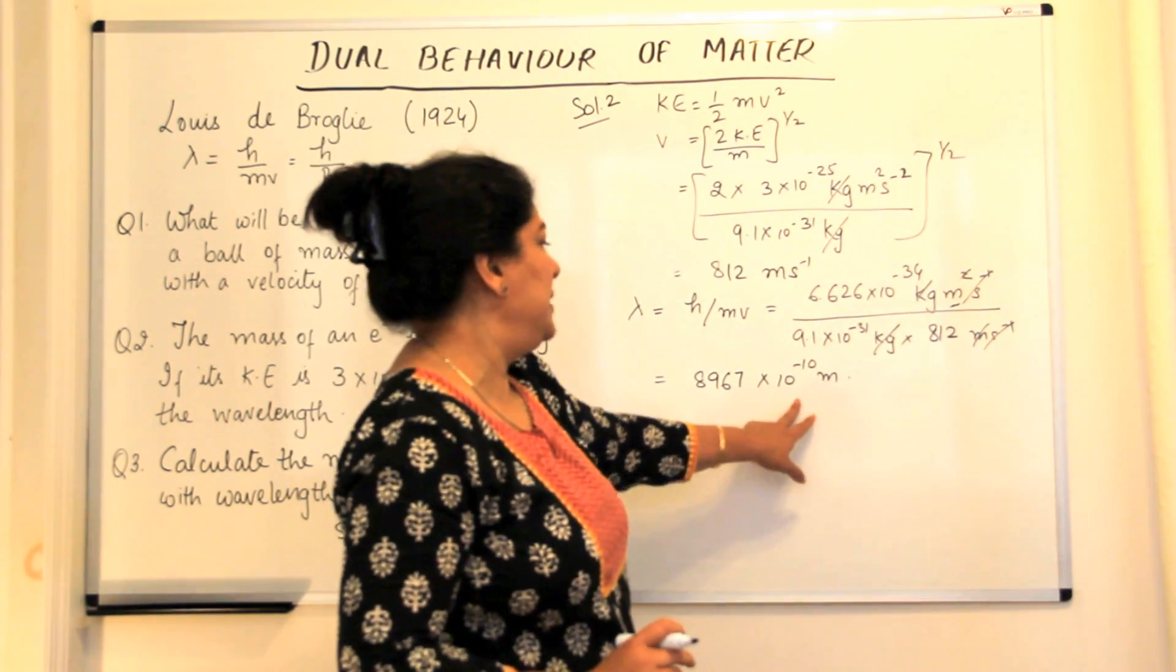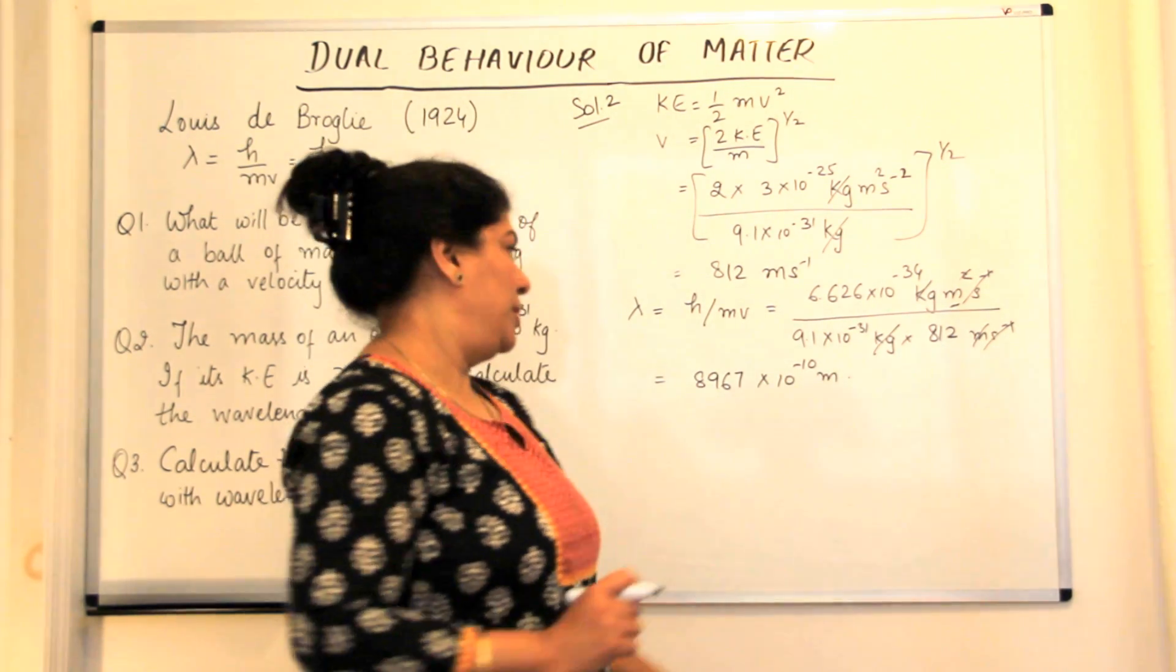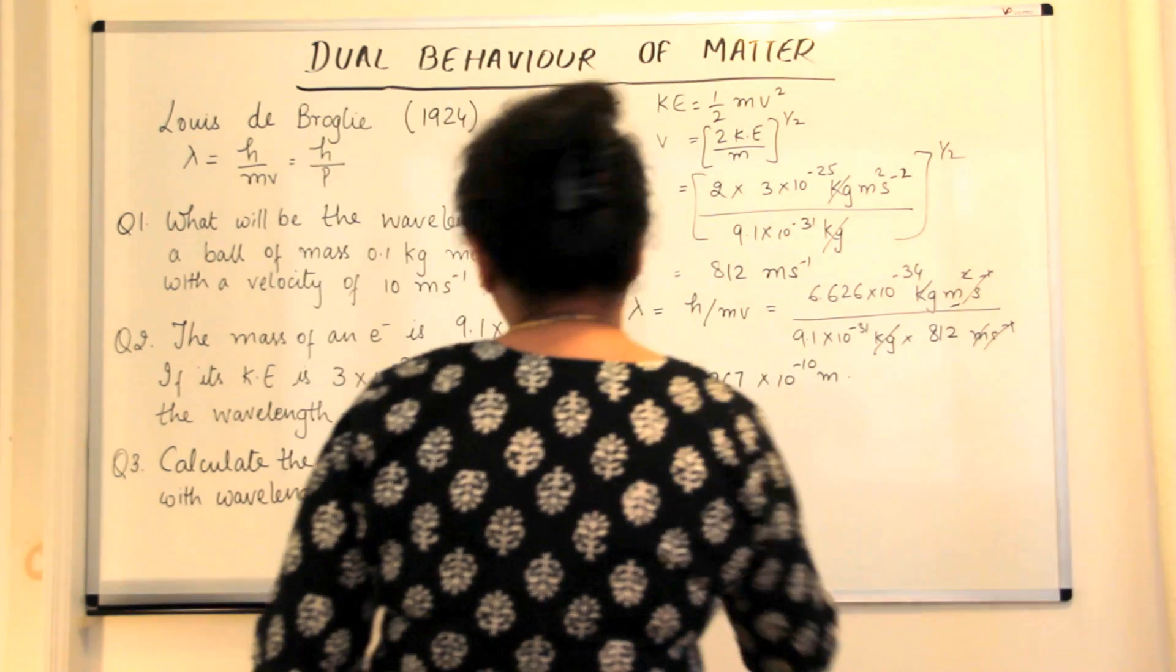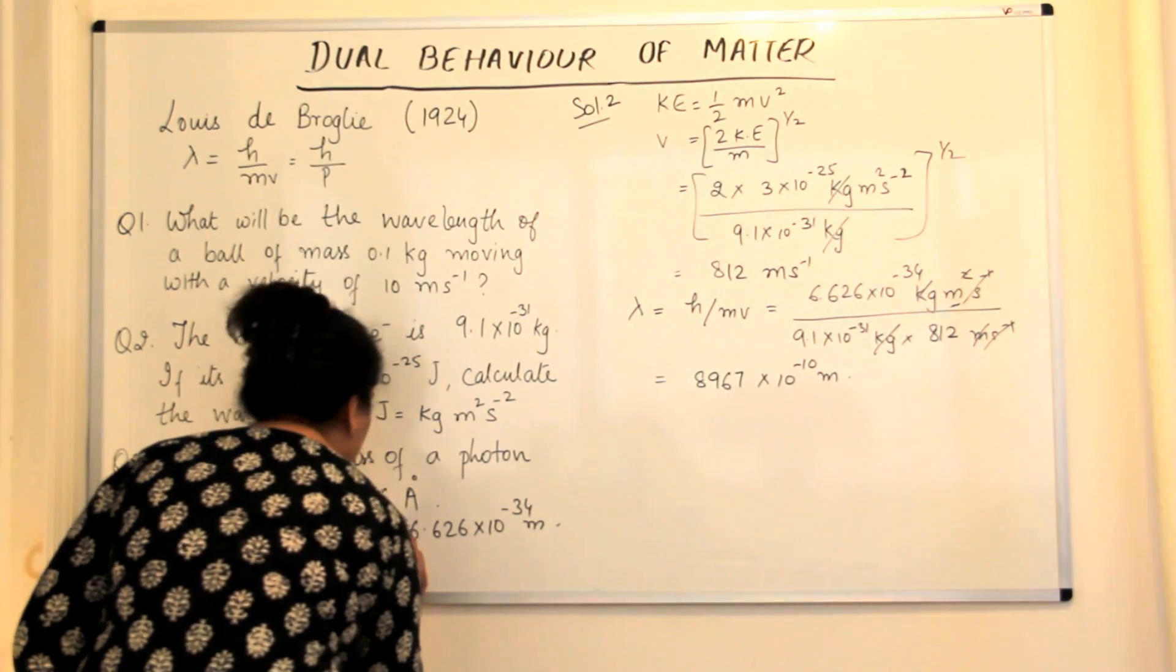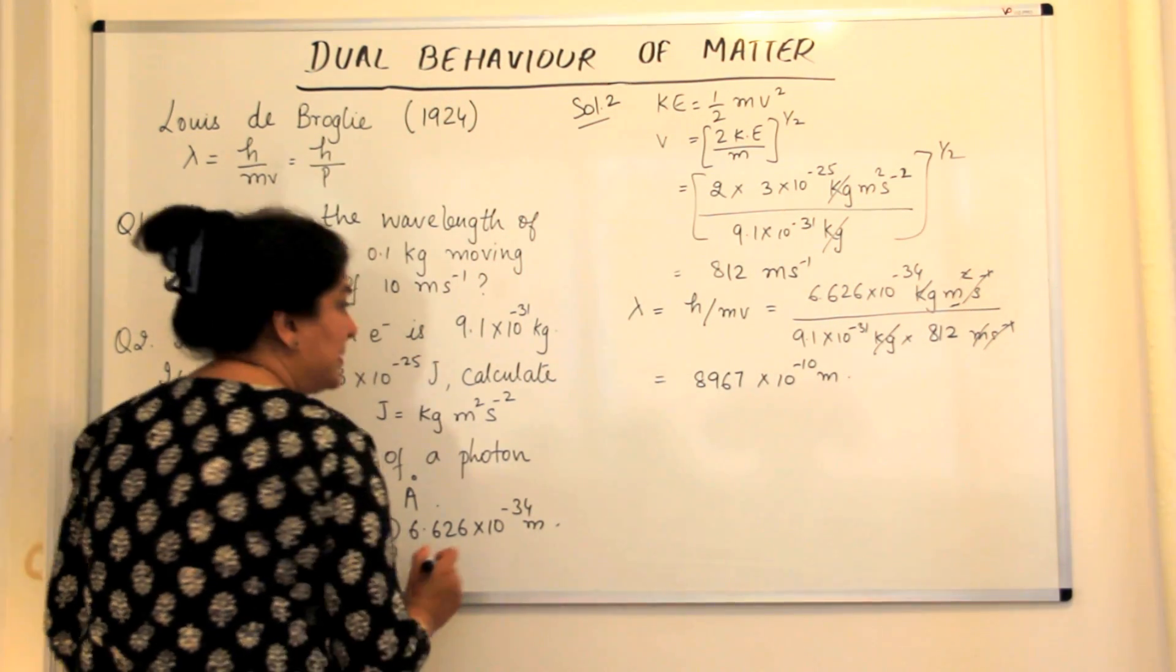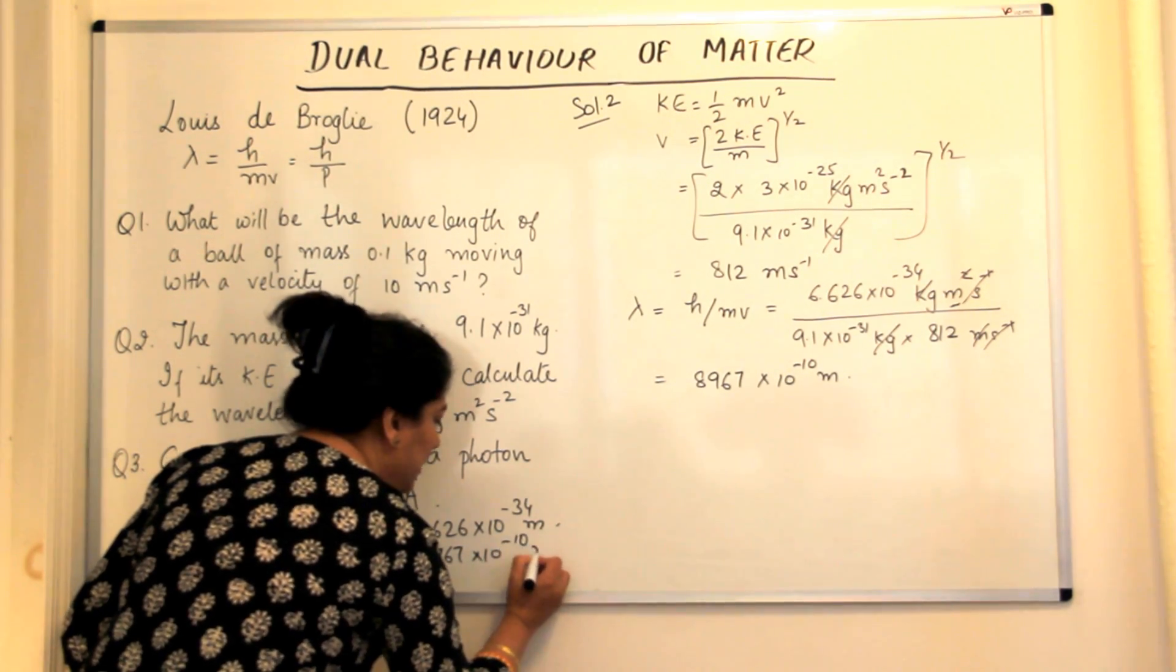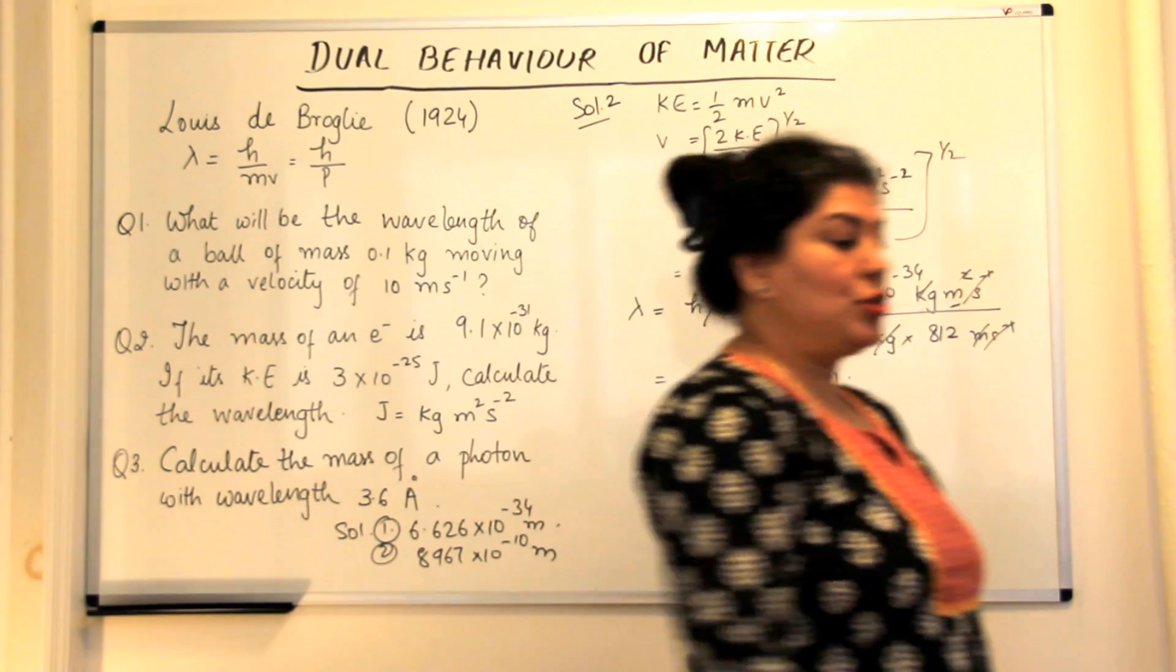And minus 10 meters means it is 8967 Armstrong. But we would like to report our answer in meters. So the solution 2 here, 1 is this, 2 is 8967 into 10 to the power minus 10 meters. So this was solution 2.